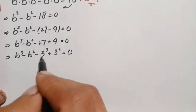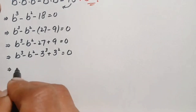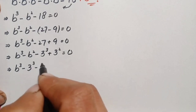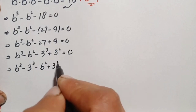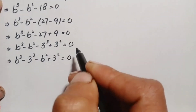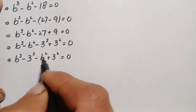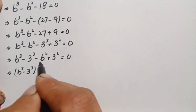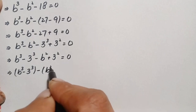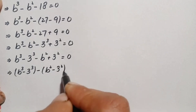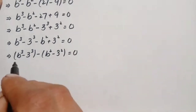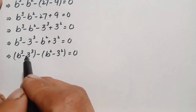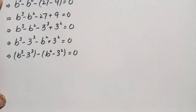We combine the cubic terms and the square terms by grouping: (b cubed minus 3 cubed) minus (b squared minus 3 squared) equals 0. We will apply two algebraic identities: the difference of cubes identity and the difference of squares identity.